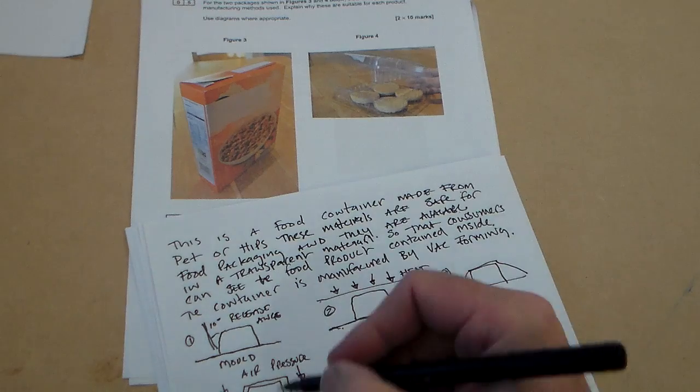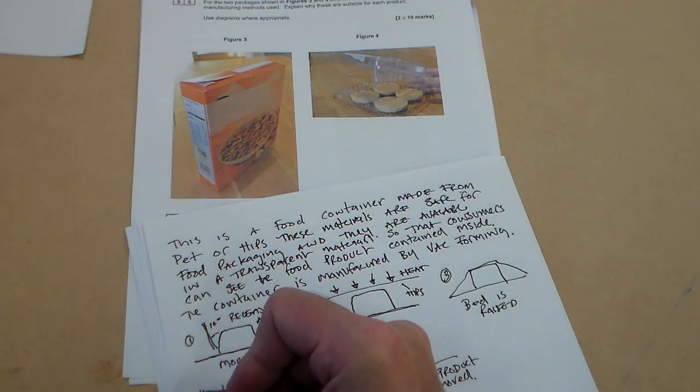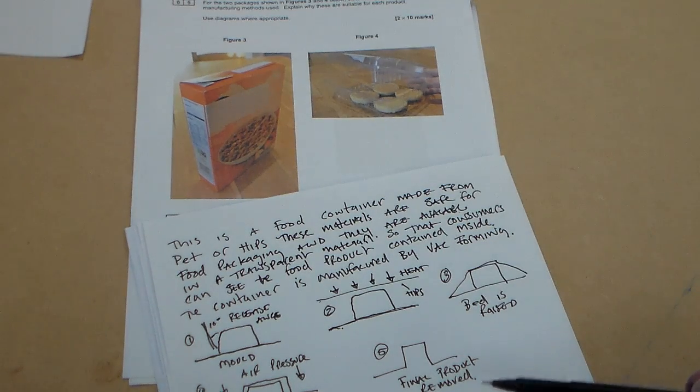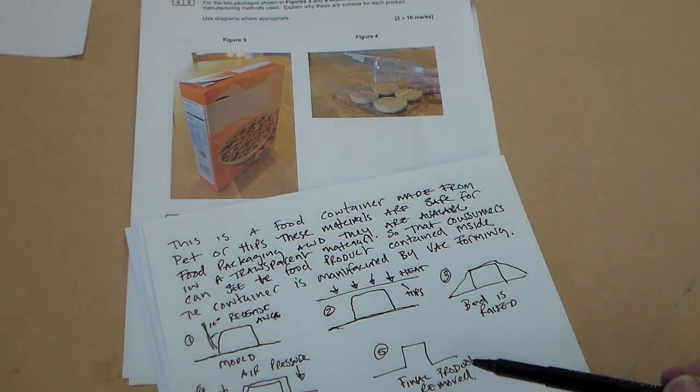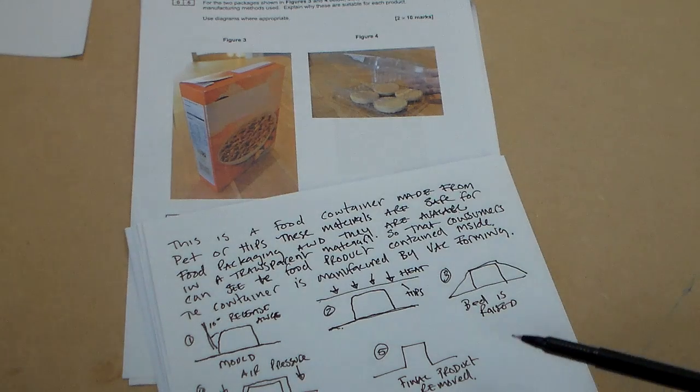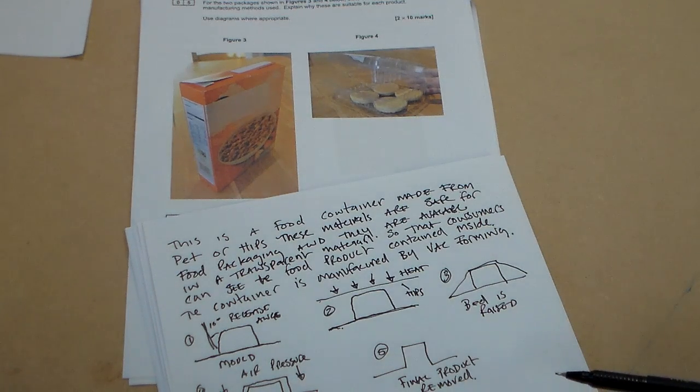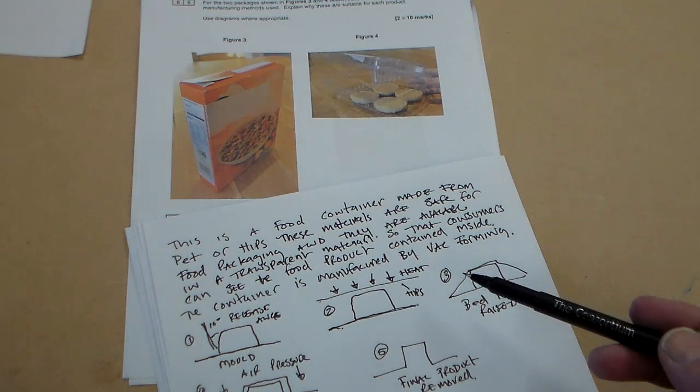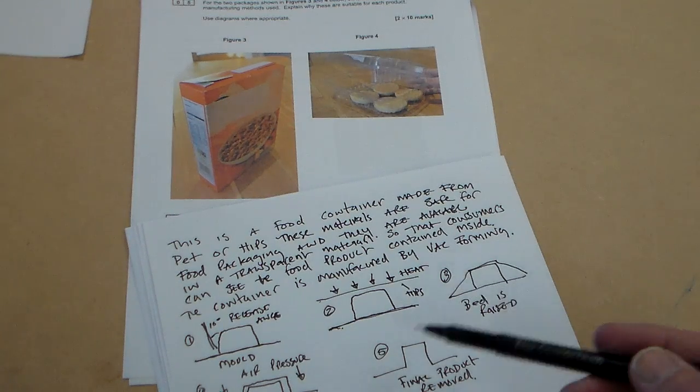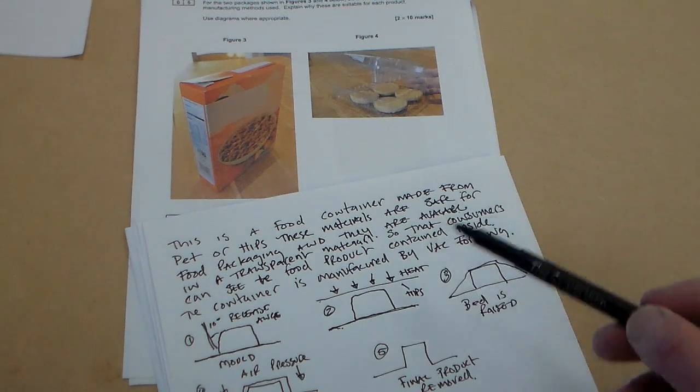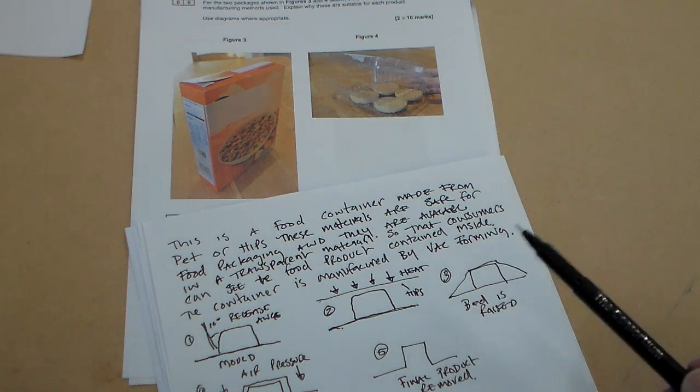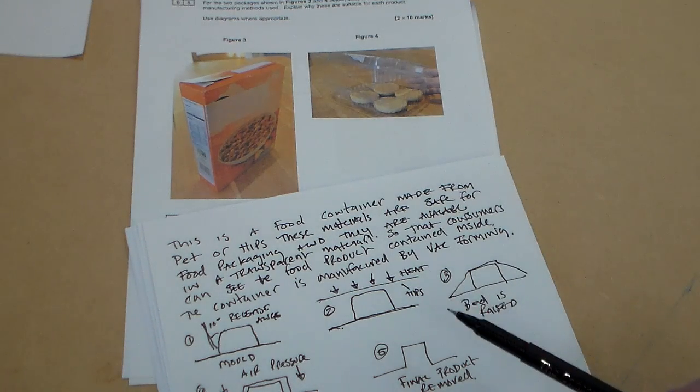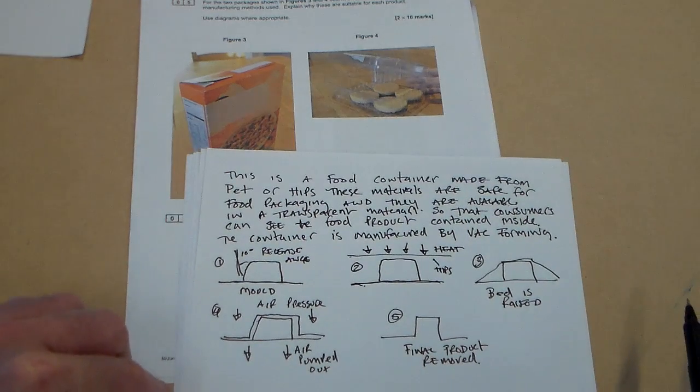Okay, so we've got one, two, three, four, five stages of vacuum forming. So there's an answer and I think really this would be in the eight to ten band. I can't see, you could write descriptions here, but I think that's fairly clear. We've talked about vacuum forming, we've talked about the materials, we've said why the material is good for that packaging. So I think there's no reason why this wouldn't be an eight to ten mark answer. So there we go.